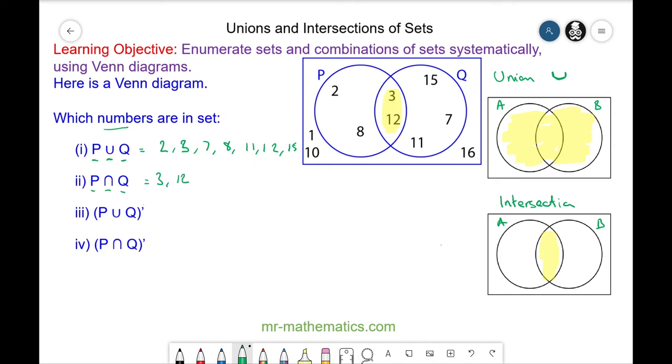This symbol here means not. So this is not the union of P and Q. This is the union. So the outside area is not the union, and this identifies the elements of 1, 10, and 16.